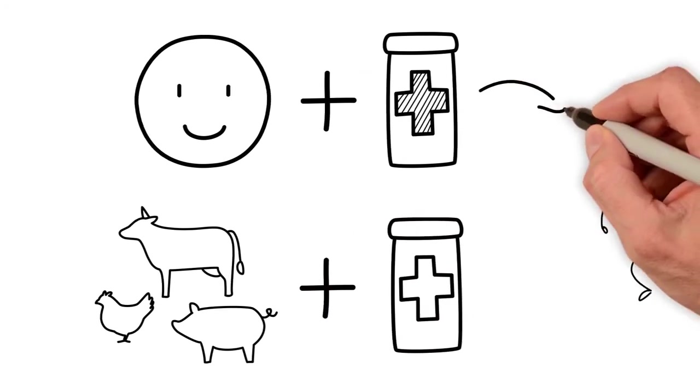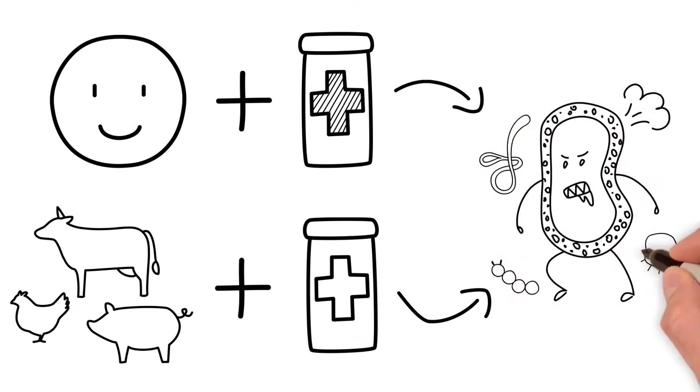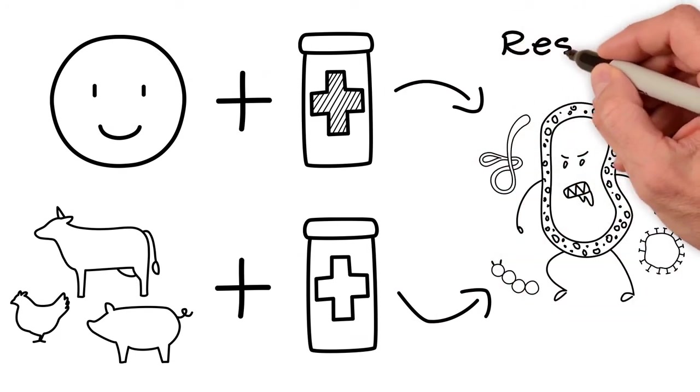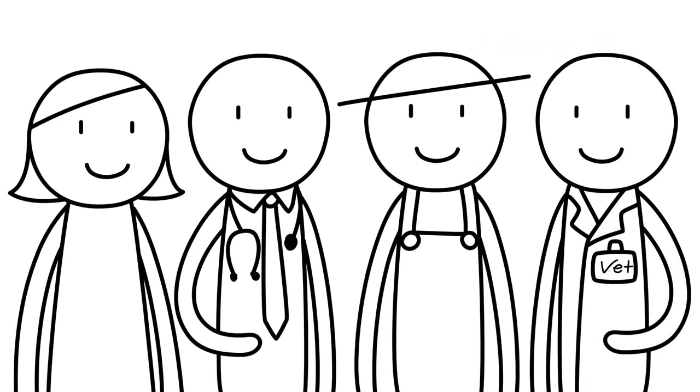What antibiotic resistance means is that a greater number of illnesses are becoming harder to treat, and that can be scary. The responsibility of resistance issues is shared with both human and animal medicine.